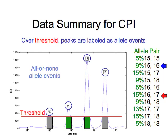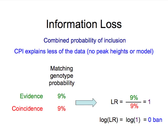However, methods like CPI would treat them equally, diffusing probability away from the more correct answer — shown by the blue arrow at 15-16 — and toward answers like 16-17, shown by the red arrow. That reduction in probability results in information loss, because the likelihood ratio is the ratio of the genotype probability at the match comparison allele pair divided by coincidence. It's now reduced from 90% to 9%, making the ratio one. Ten to the zero is one, so it has no information — zero ban. Because CPI explains less of the data, you end up losing information, which can be an issue.